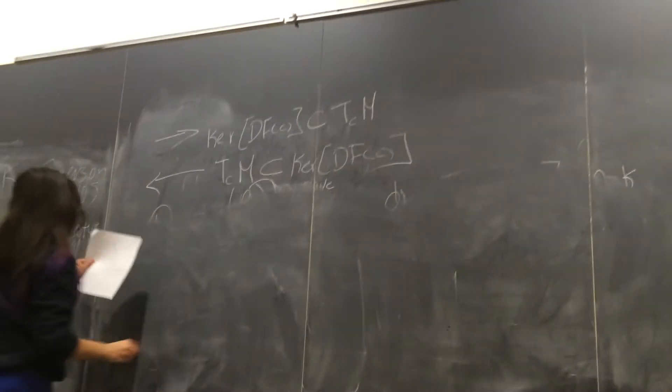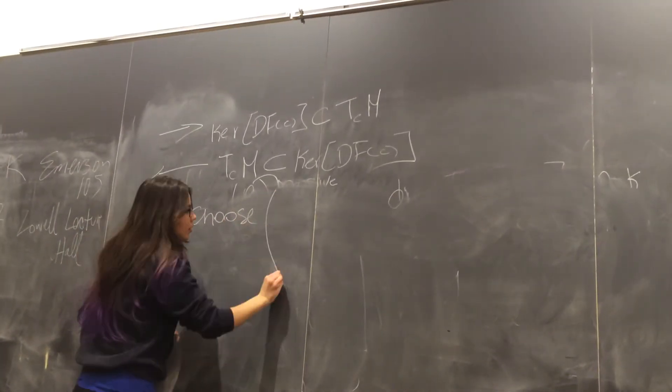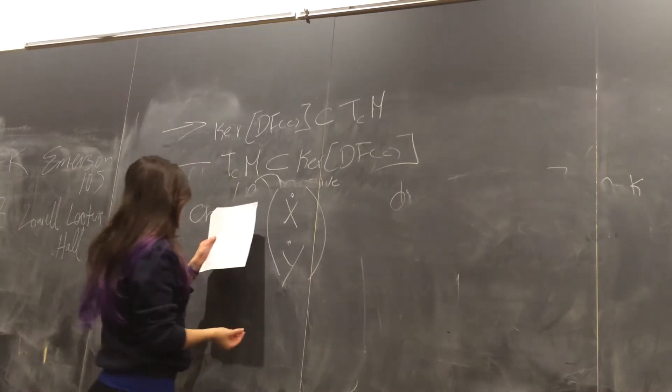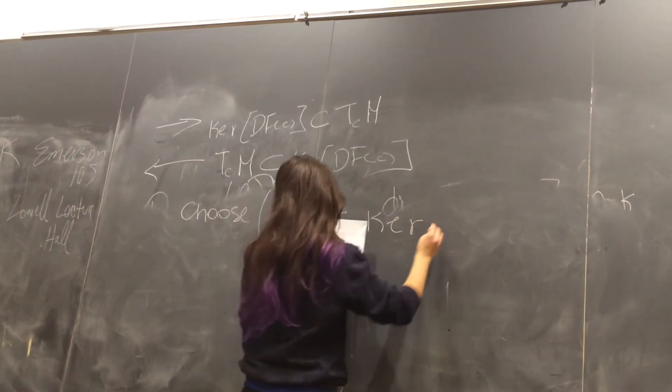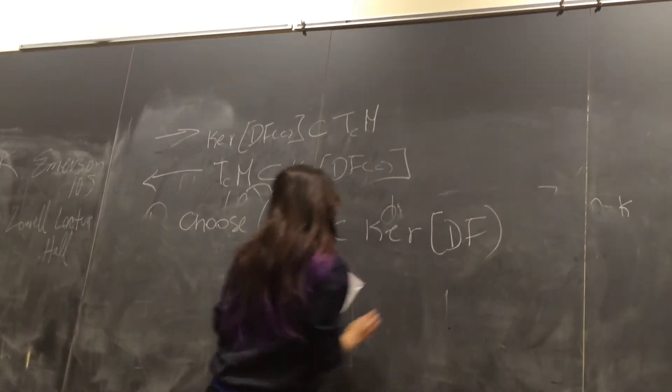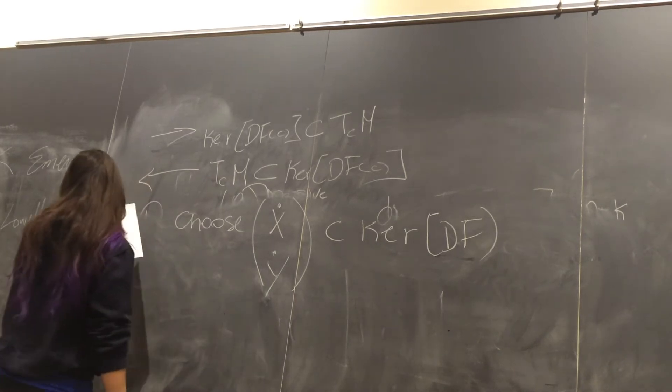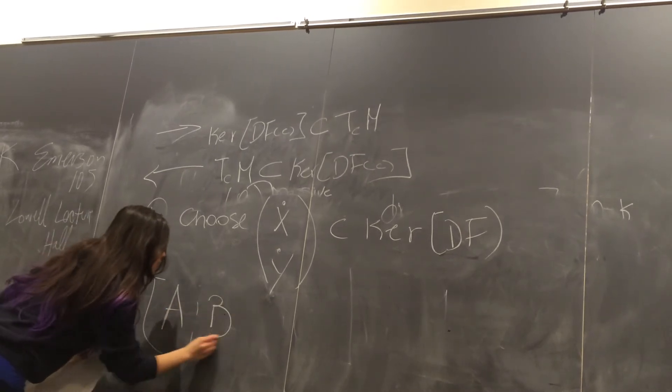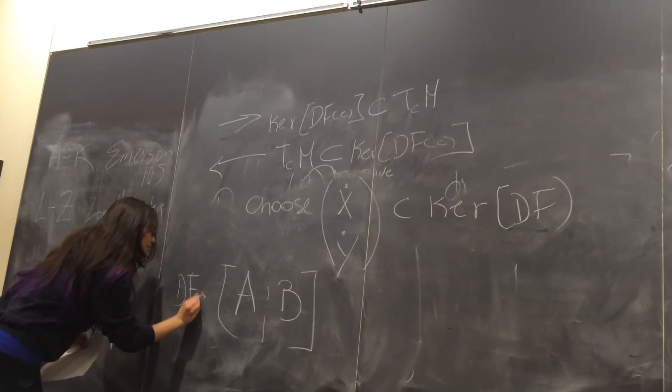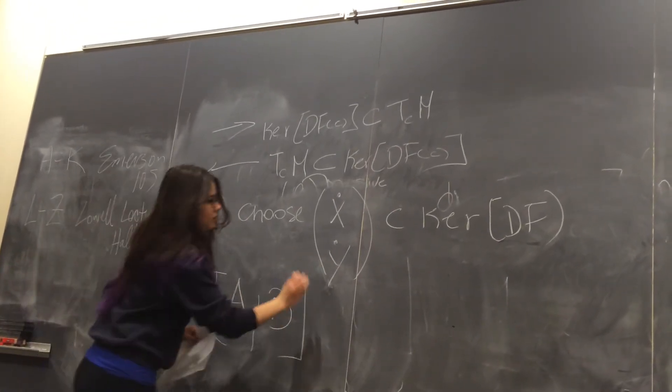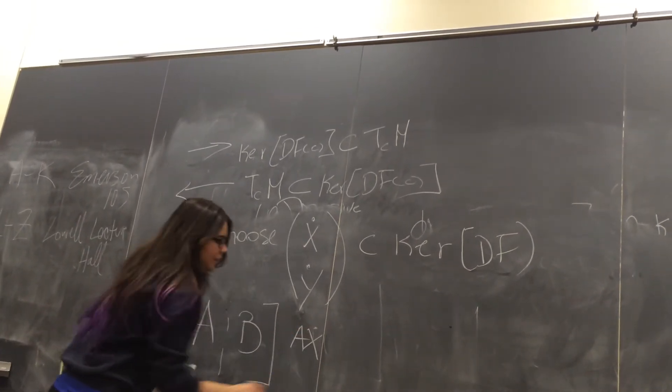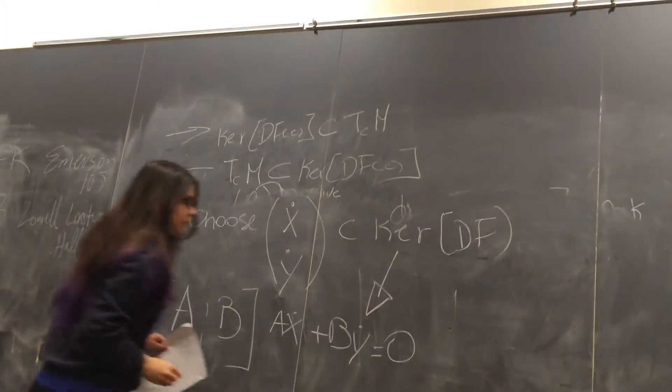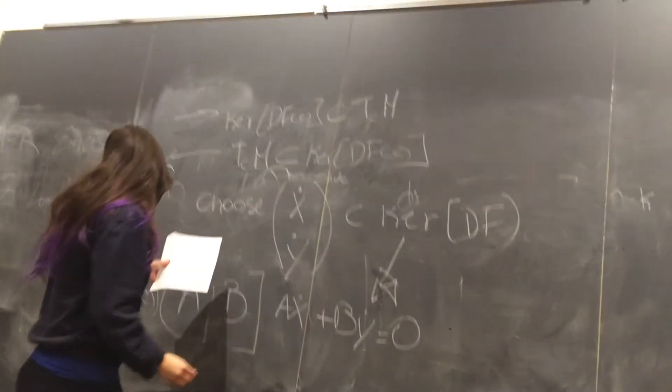I can choose some set of increments X and Y that belongs to the kernel of DF, and they are increments because they belong to DF which is the derivative. If we apply the previous matrix that we had, which was the matrix of DFC to this, we are going to get that A times X plus B times Y is going to be zero because it's in the kernel.